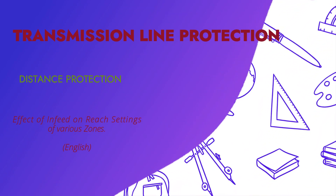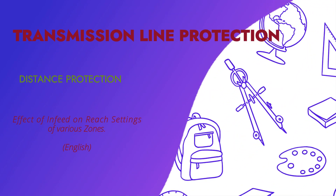In this session on distance protection of transmission lines, we will discuss the effect of infeed on reach settings of distance protection — specifically the infeed effect on the reach settings of Zone 1, Zone 2, and Zone 3. We have already studied the basics of these reach settings in our last session.